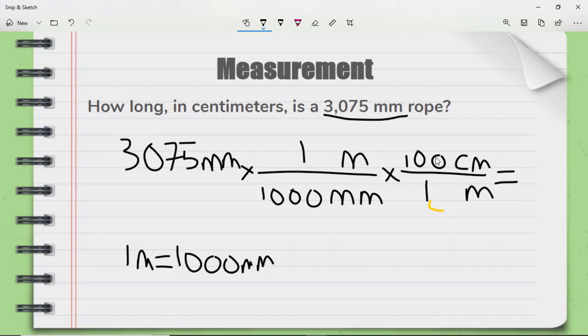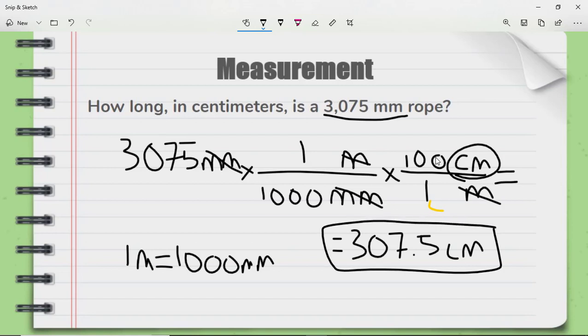A good way to check to make sure that if you did this correctly is to cross off your units. I know that if I have a unit on top of a numerator and the one on the bottom of a denominator that they are going to cancel. Just like in math class. If I'm left with the unit that I want at the very end then I know I am done. And now I just need to do the math. 3,075 divided by 1,000 times 100. And my answer is 307.5 centimeters. And you can do this for a variety of different conversion factors that you'll see in a later video.